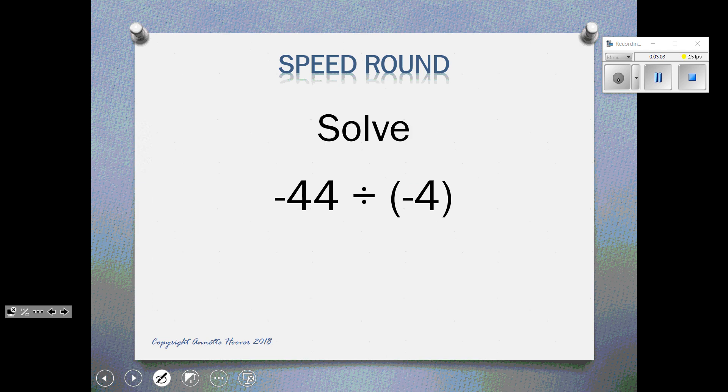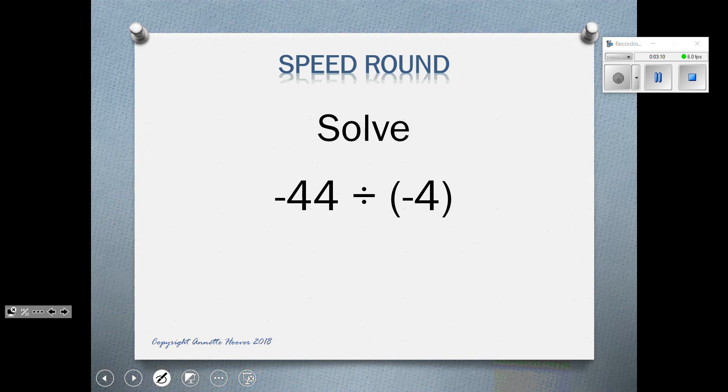Here we have two negatives. Negative 44 divided by negative 4. Positive 11. Two negatives make a positive.